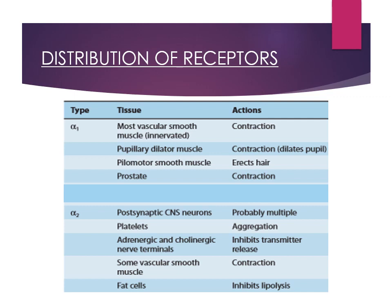For the prostate, alpha 1 stimulation also causes contraction. The radial muscle of the iris contracts causing mydriasis — dilation. The pyelomotor smooth muscles contract — the erector pili muscles contract the hair — which means goose bumps are produced. So for alpha 1 receptors, you have seen the locations, actions, and the second messenger mechanism.